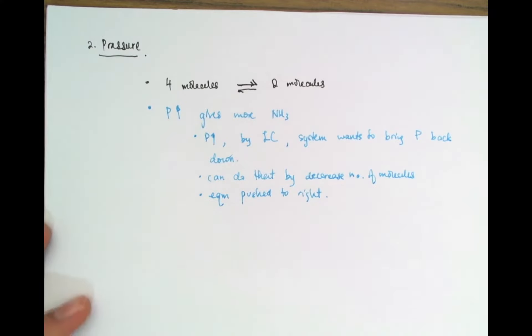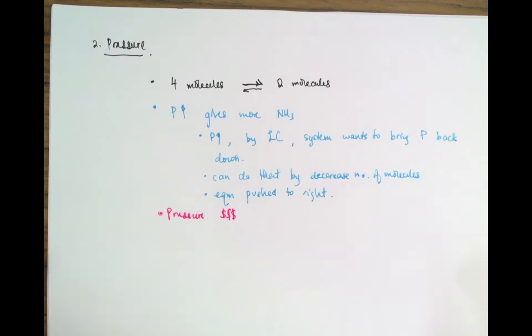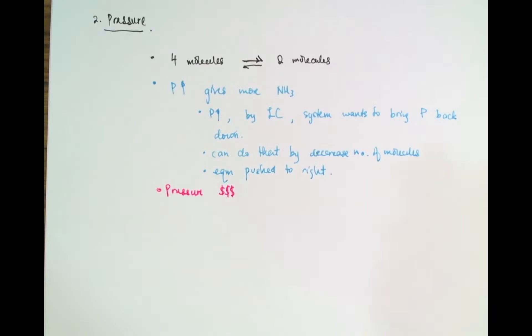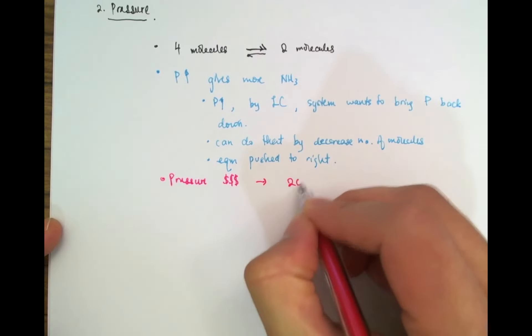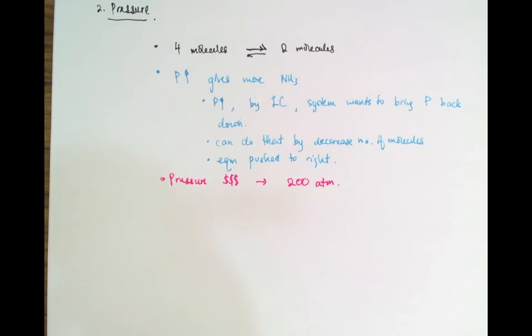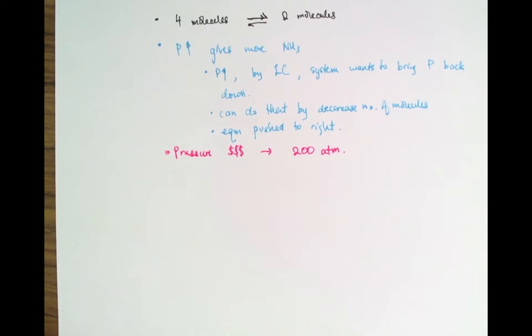But in practice, pressure is expensive. Because I'm going to need to strengthen my pipes to extend the higher pressure, I'm going to need to spend a lot of electricity on running the pumps to increase the pressure. So it turns out that this is also a compromise, and the compromise value is about 200 atmospheres. So that's enough to give me a fairly good, profitable yield of ammonia, while still not spending too much money on my pipes and pumps.